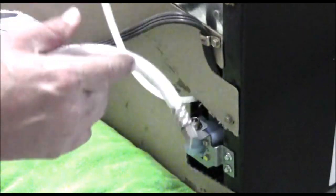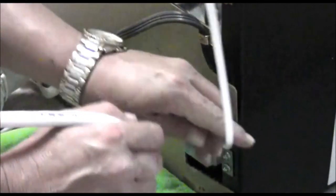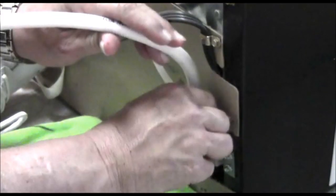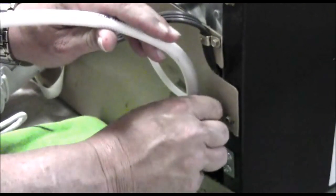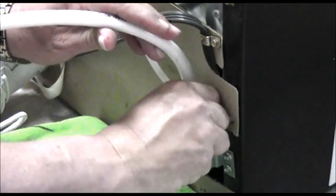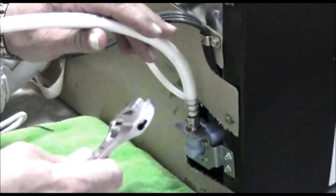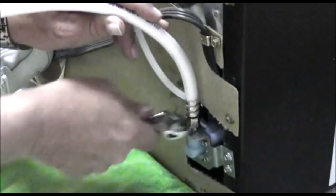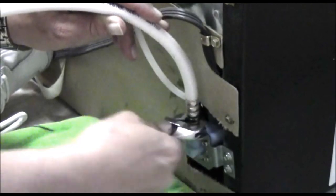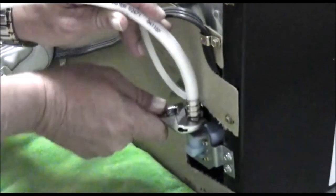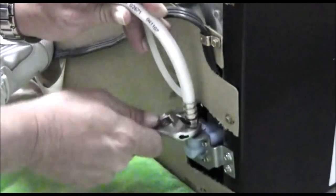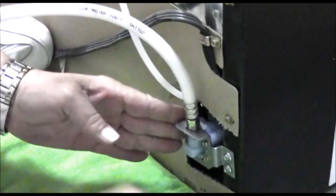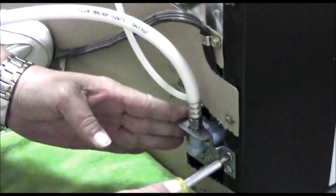Then we'll take our fill line, go ahead and screw it back in place with our adjustable wrench and secure. Make sure all these are good and tight.